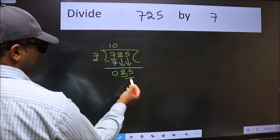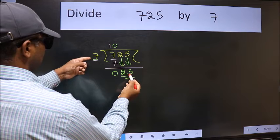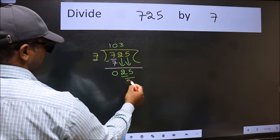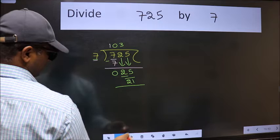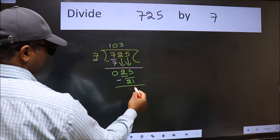Now 25. A number close to 25 in the 7 table is 7 threes, 21. Now we should subtract. We get 4.